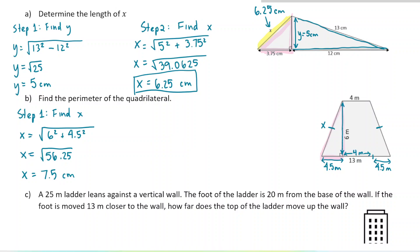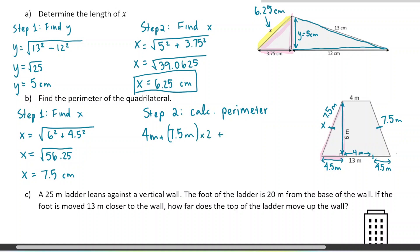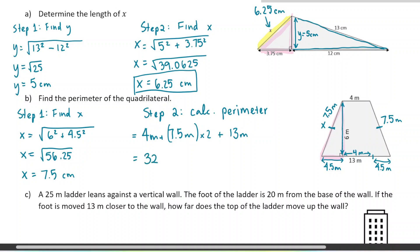Now we know all the side lengths. This side is 7.5, and the side over here is 7.5 as well because they're equal — that's what the tick mark means. Step two: calculate the perimeter. For the perimeter, you add up all the outside side lengths. So it's 4 meters plus 7.5 times 2 — because there are two of them — plus the bottom side length of 13. That gives 4 plus 15 plus 13, which equals 32 meters.